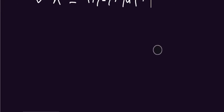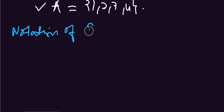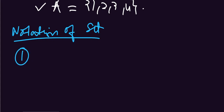So the second topic is the notation of a set — it means how to denote or notate a set. There are 3 notations. The first is the tabular method.